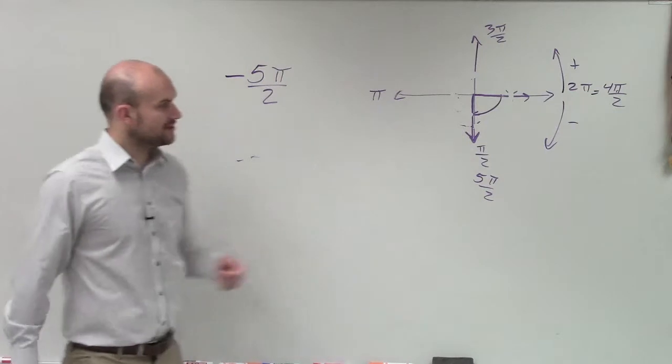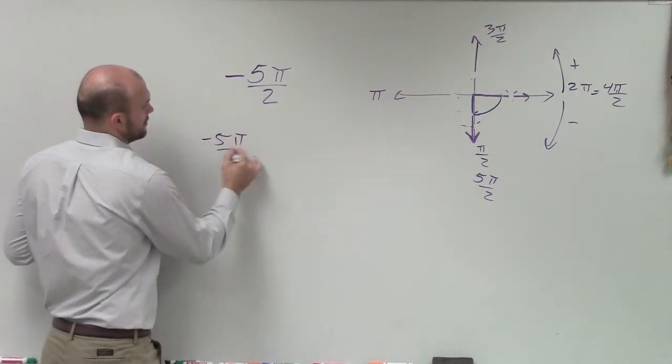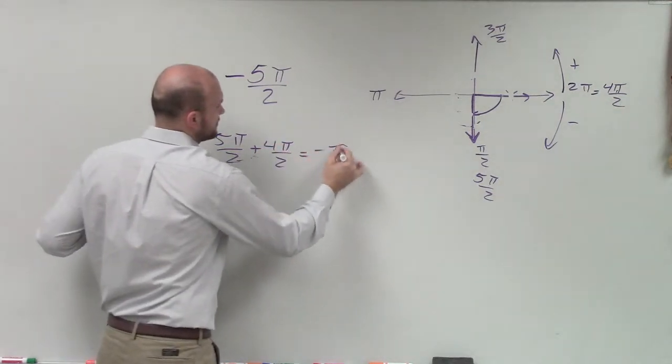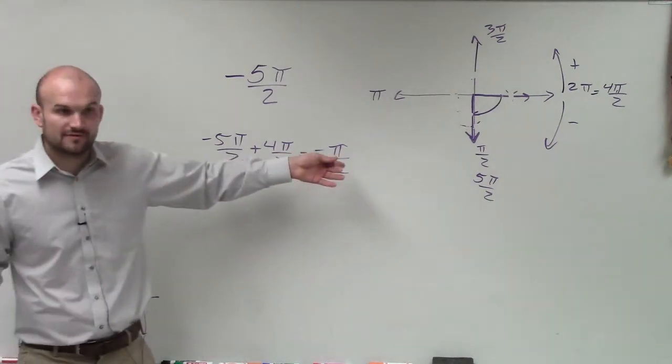So, if you look at this one, if I have negative 5π over 2, if I add 4π over 2, that gives me negative π over 2, which is perfect. That is a negative coterminal angle.